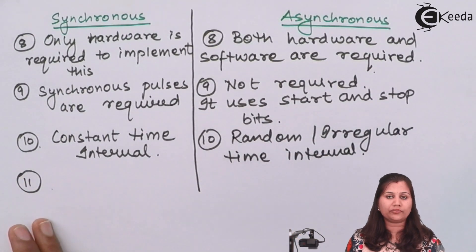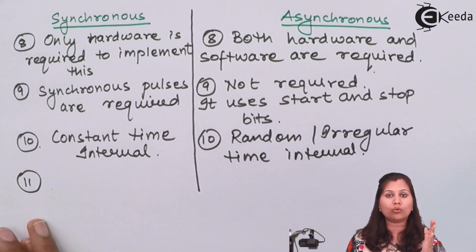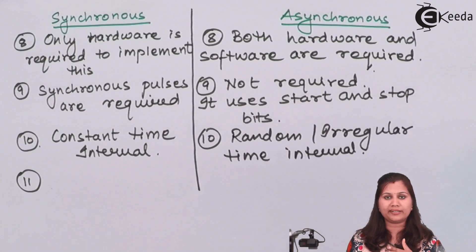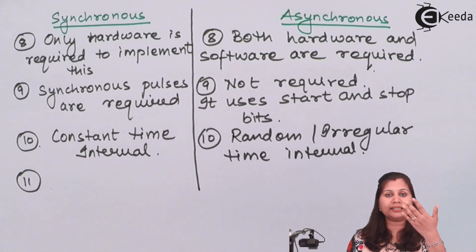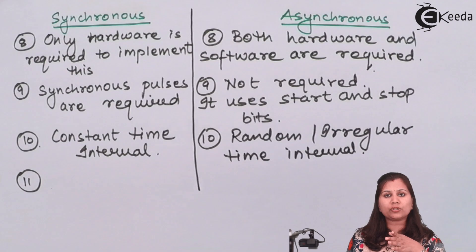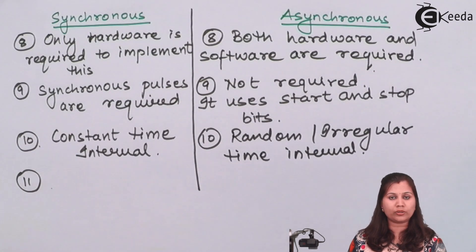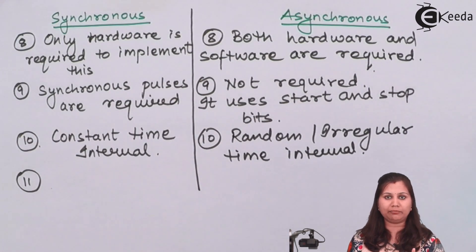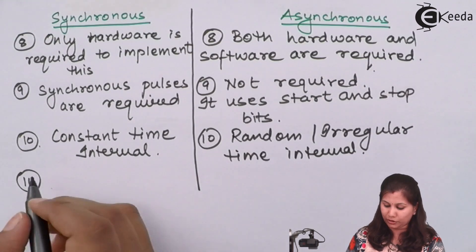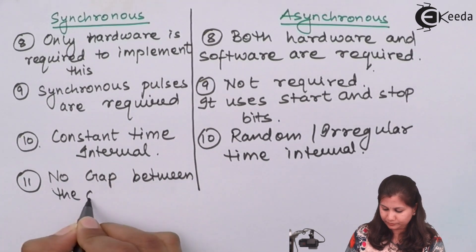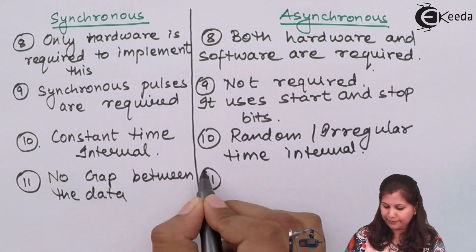In synchronous, because blocks of data and frames are transmitted, there is no gap between the data. Whereas in asynchronous, one bit is transmitted at a time, so there is a chance of a gap between the data — because start and stop bits are present. When the next byte is transmitted, it will also have start and stop bits, so there is always a gap between two blocks. In synchronous, blocks are transmitted simultaneously with no gap.